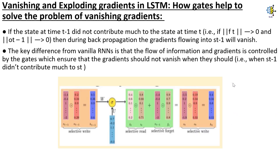How gates help to solve the problem of vanishing gradients: if the state at time T-1 did not contribute much to the state at time T, i.e., if FT tends to 0 and OT-1 tends to 0, then during backpropagation, the gradients flowing into ST-1 will vanish. The key difference from vanilla RNNs is that the flow of information and gradients is controlled by the gates, which ensure that the gradients should not vanish when they should — i.e., when Ht-1 didn't contribute much to Ht.